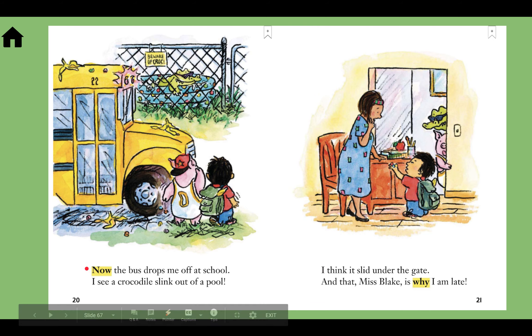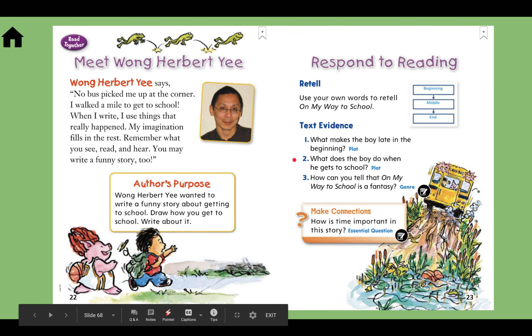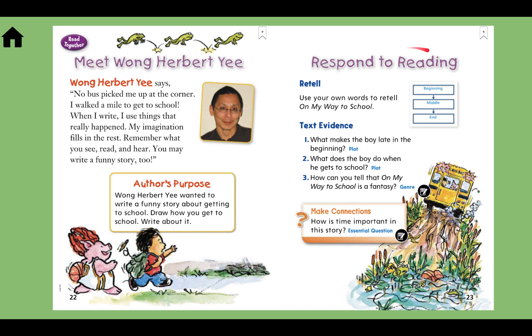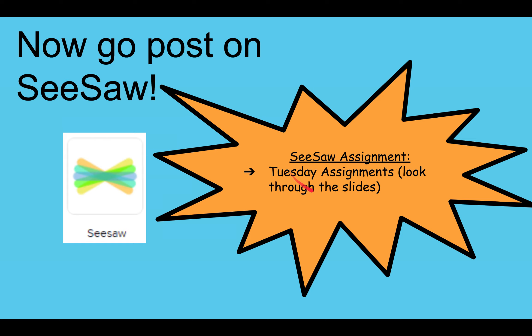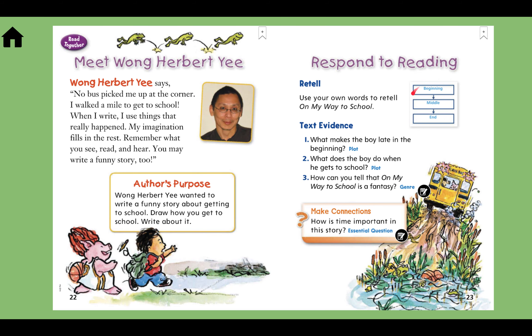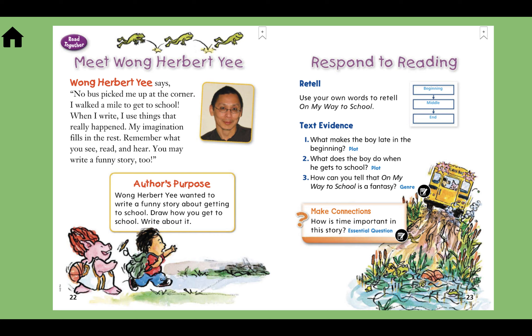Now the bus drops me off at school. I see a crocodile slink out of a pool. I think it slid under the gate. And that, Miss Blake, is why I'm late. So I want you to think about retelling what happened at the beginning, the middle, and the end of our story on my way to school. In Seesaw, you have Tuesday assignments. And one of those assignments in one of the slides, there are four slides, is a beginning, middle, and end response to this story. So keep your literature anthology out when you're doing your Seesaw assignments today, friends. I'll see you later for math. Bye, friends!